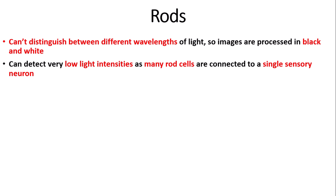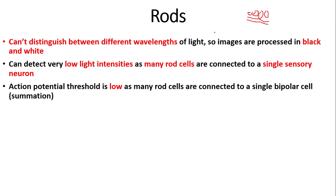Rods can detect very low light intensities because many rod cells are connected to a single sensory neuron — specifically the optic nerve. This is called high spatial summation. Also, the action potential threshold — the voltage required to carry a sufficient nerve impulse to the brain — is low, as many rod cells are connected to a single bipolar cell. This is what we call summation.